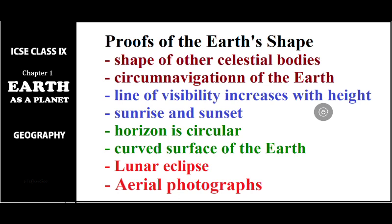At present, sitting in front of a mobile phone or computer, we have a lot of proofs — we have technology, satellites which can take photos of the earth from outer space. But before that we had many other ideas which helped us conclude that the earth's shape was spherical. We'll go through all these one by one. The essential proofs are: shape of other celestial bodies, circumnavigation of the earth, line of visibility, and so on.